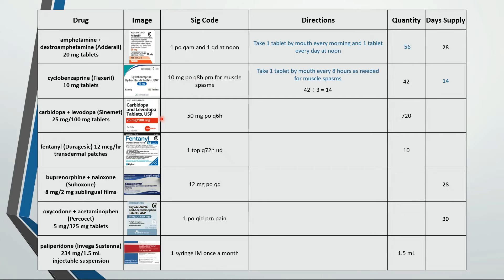Carbidopa-levodopa is a combination of two drugs, so you'll see two strengths. The first number refers to the strength of the drug named first — so the 25 mg refers to carbidopa and the 100 mg refers to levodopa. The directions are saying take 50 mg of carbidopa, or two tablets, by mouth every six hours. We're taking eight tablets a day, so 720 divided by 8 is a 90-day supply.